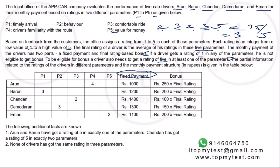The partial information based on the ratings of the drivers and the monthly payment structure in rupees is given. For example, Arun's payment: he gets 1000 rupees as a fixed payment. Based on his final rating, his bonus is: final rating × 250 rupees. So if he gets an overall rating of four, his bonus is 4 × 250 = 1000 rupees, making his total payment 2000 rupees.